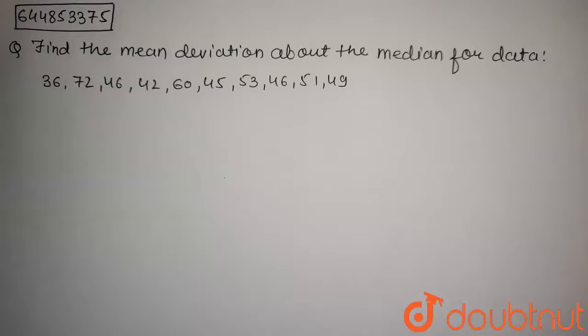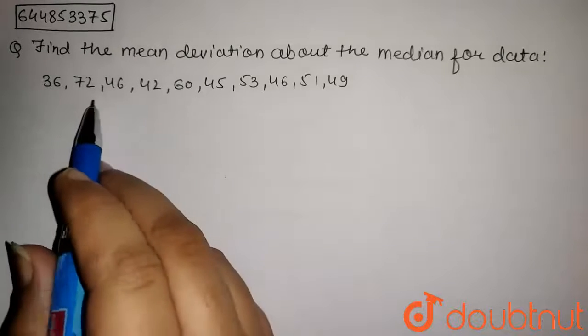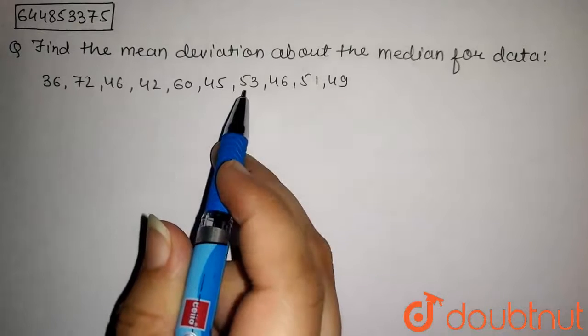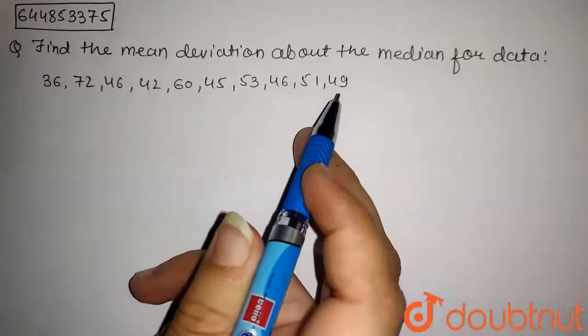The question is find the mean deviation about the median for data: 36, 72, 46, 42, 60, 45, 53, 46, 51 and 49.